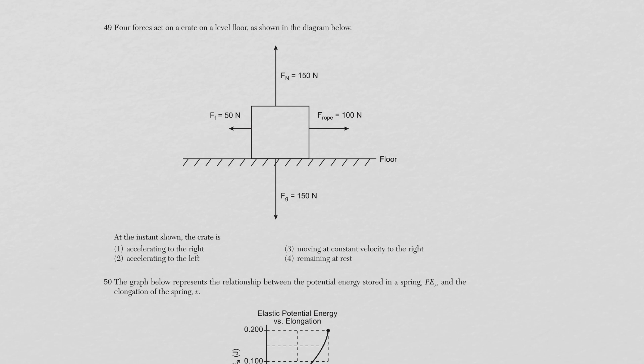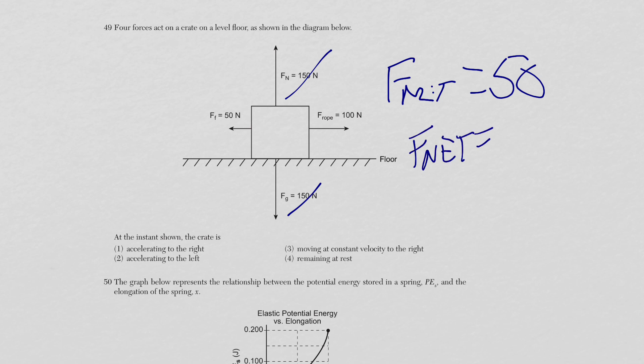Question 49: four forces act on a crate. Normal force and gravity cancel. A 100 N force is applied right with 50 N friction opposing it, giving F_net = 50 N to the right. Since F_net ≠ 0, the crate is accelerating to the right — choice one.